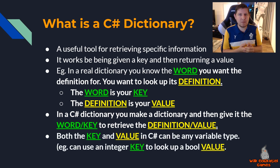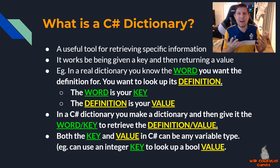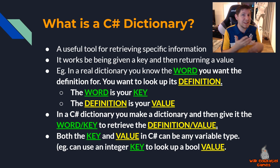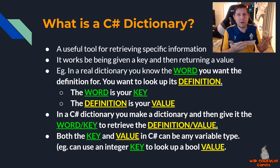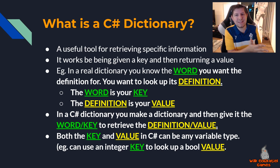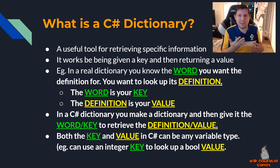In Unity, you don't have to be restricted to strings. Both your key and your value can be any type of variable. You can use an integer to look up a boolean value - for instance, is key 26 set to true or is key 26 set to false? This is the power of a dictionary.